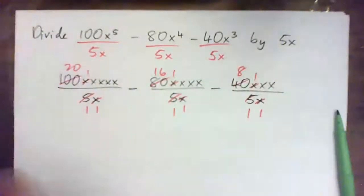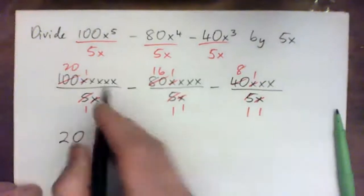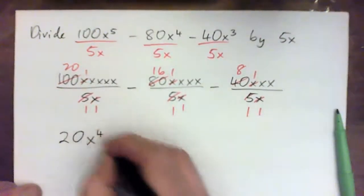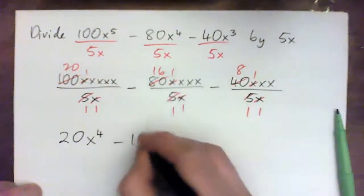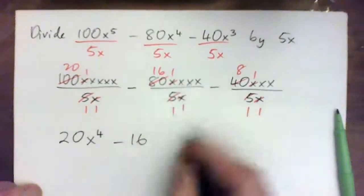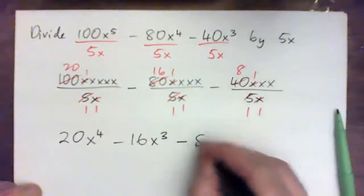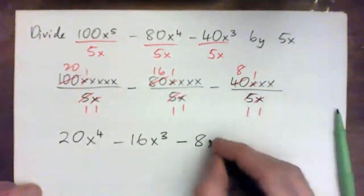And so we have a 20, and then 1, 2, 3, 4 x's here, which is x to the power of 4. And then we have a 16, and then 1, 2, 3 x's, x to the power of 3. And then we have an 8, and 1, 2 x's, x to the power of 2.